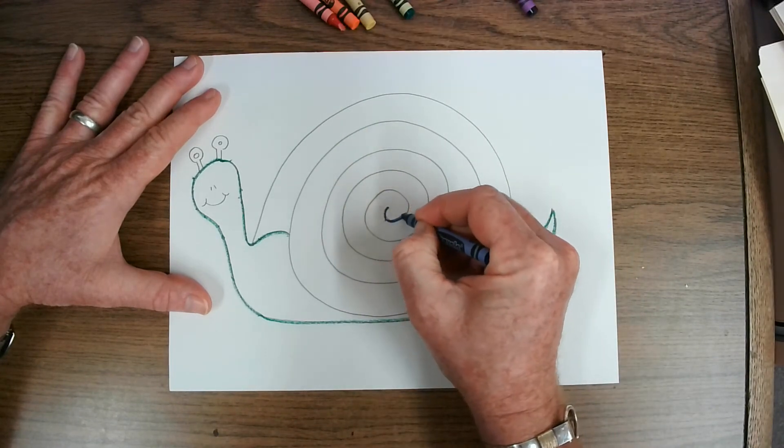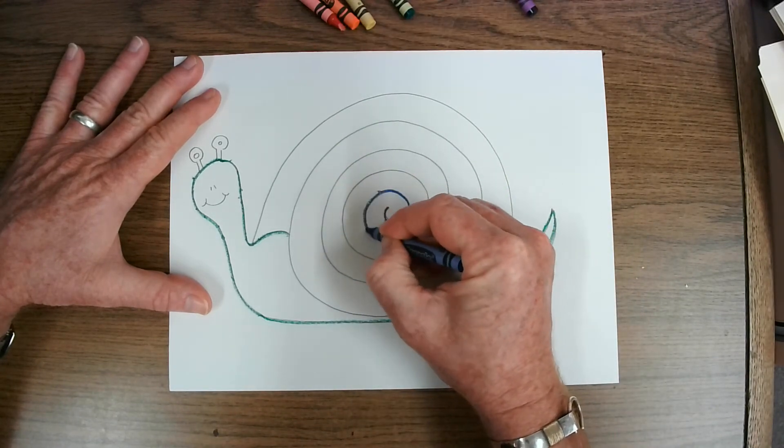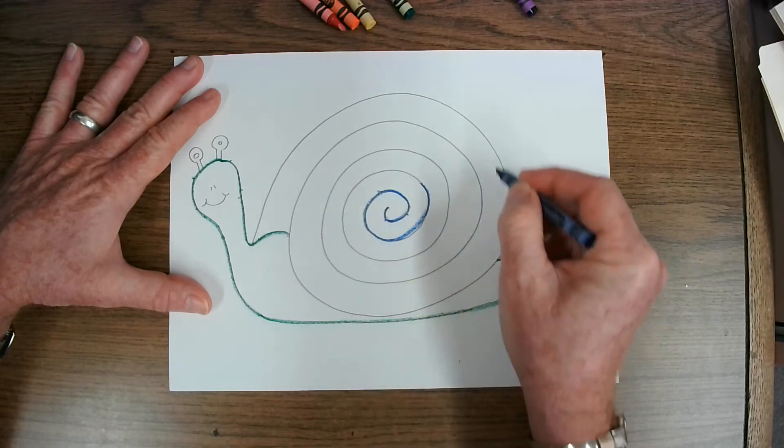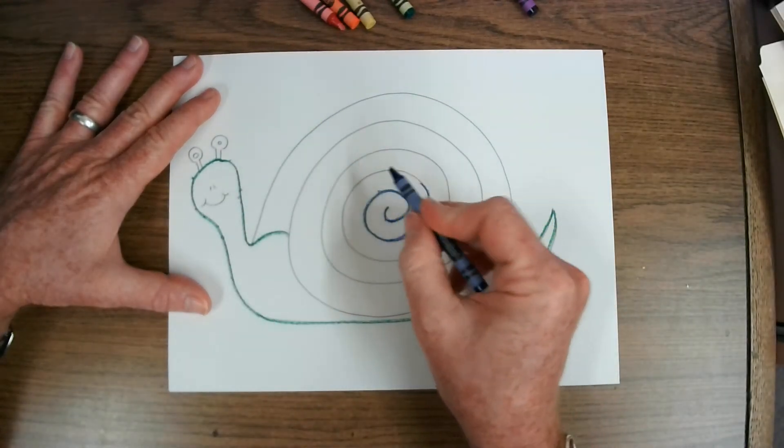And I'll start here. And I'm going to use dark blue because it covers up the crayon nicely. And I can keep going around and around and around and around so the whole snail shell is outlined with blue.